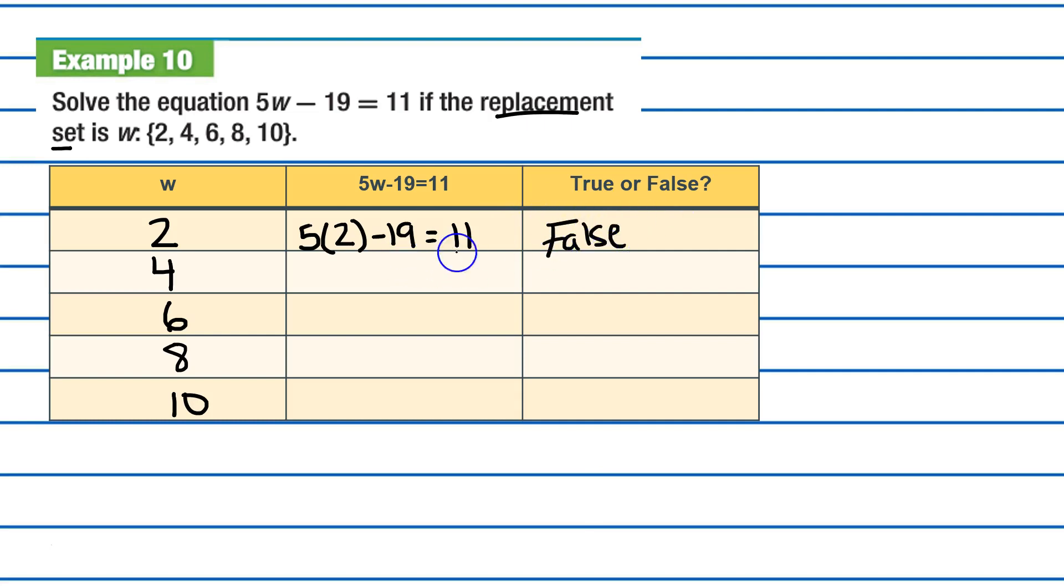We're trying to get 11 is equal to 11. So, let's try this one. 5 times 4 minus 19. Is this equal to 11? Well, 5 times 4 is 20, minus 19. Well, that's 1. 1 does not equal 11. Because of that, we're going to say it's false.